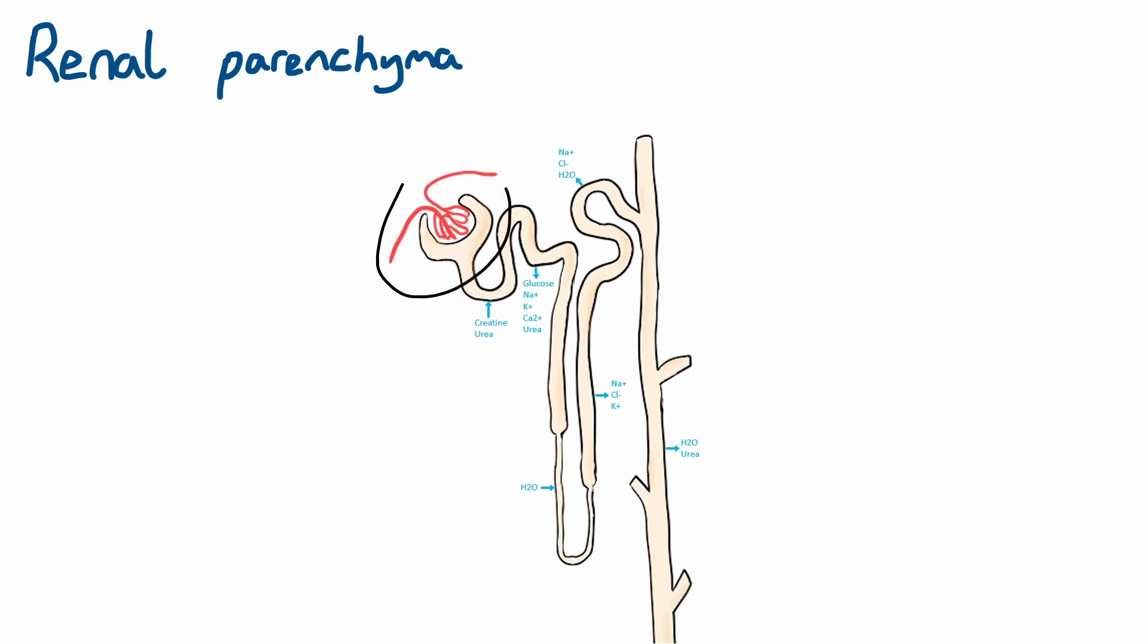Blood is filtered in the renal corpuscle, which is made of the glomerulus, which is a tuft of blood vessels, and the Bowman's capsule, which collects the filtrate from the blood.